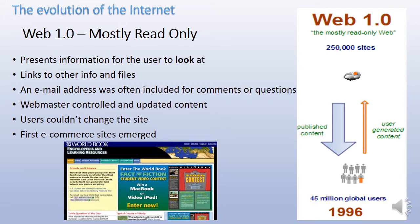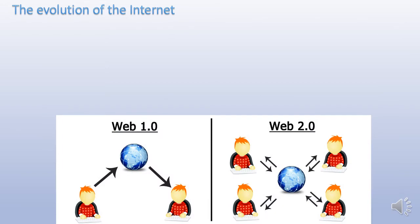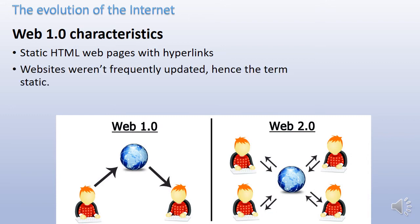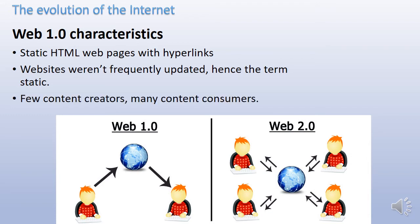The first e-commerce sites also emerged during this period. The characteristics of Web 1.0 were that the web pages were static and done in HTML. There were hyperlinks so you could click on them and be taken to another page. Most websites were not very frequently updated, which is why we call them static. There were very few content creators but many content consumers.